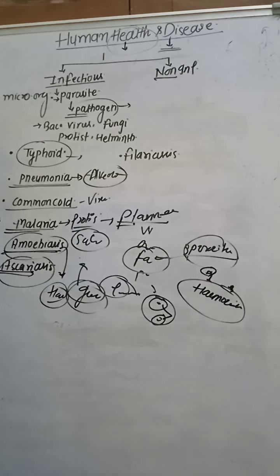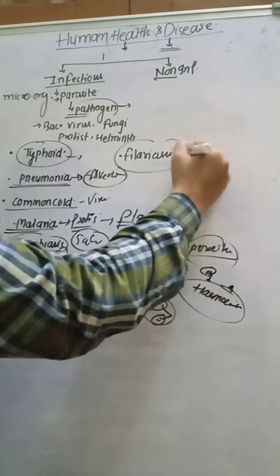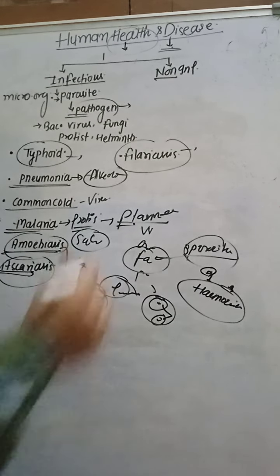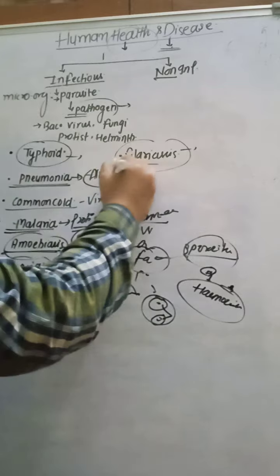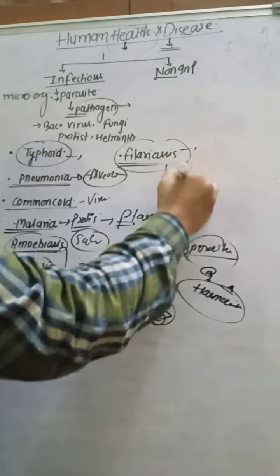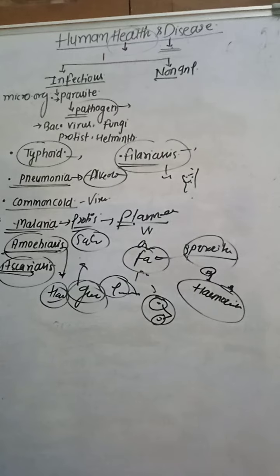Filariasis, caused by Wuchereria bancrofti, is also called elephantiasis. It is a helminth infection that causes swelling and lymphatic fluid increase in the lower limbs.